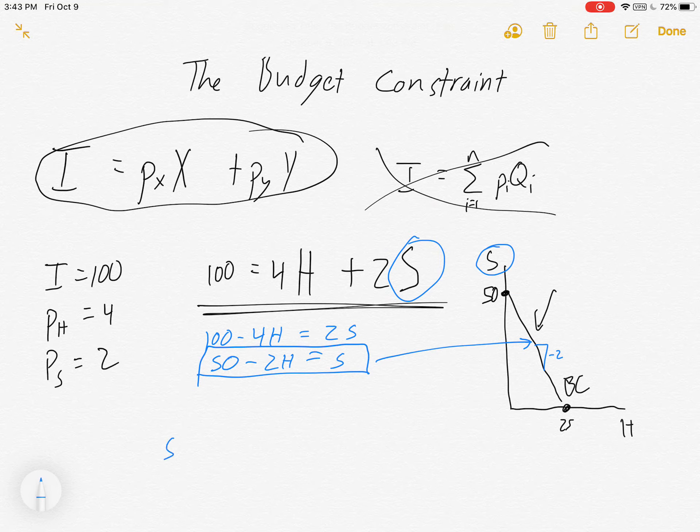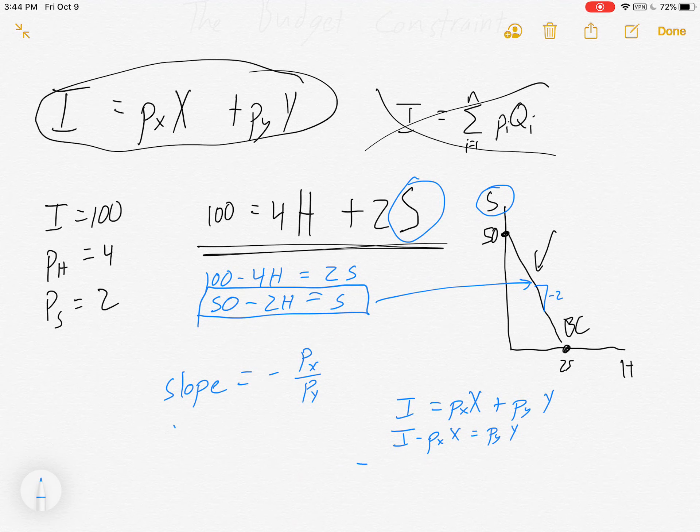I can tell you that the slope is always negative P_X over P_Y. Why is that? Because I can rearrange my original equation in the same way. I can solve for my Y variable. I'll have I minus P_X times X equals P_Y times Y. Y equals I over P_Y minus P_X over P_Y times X.